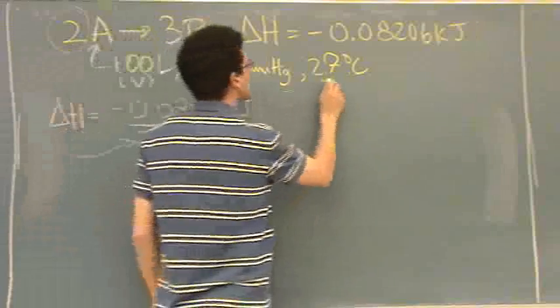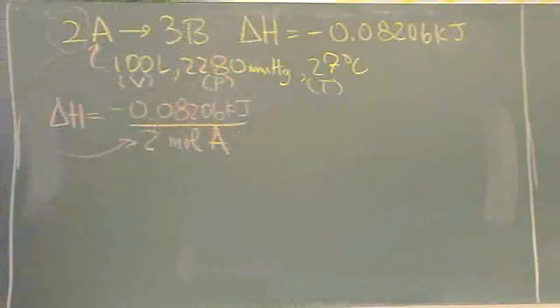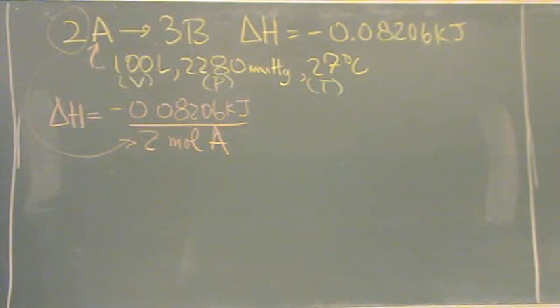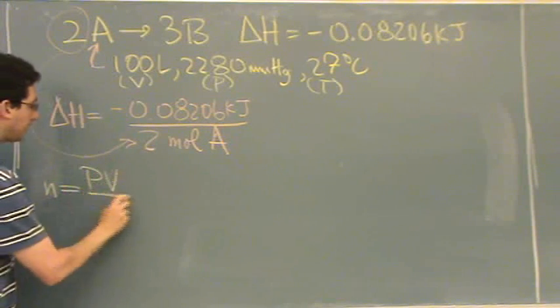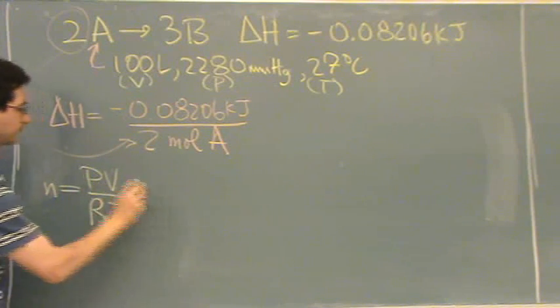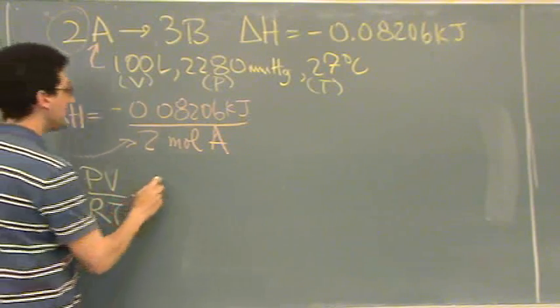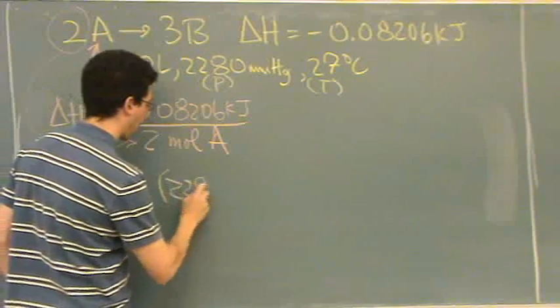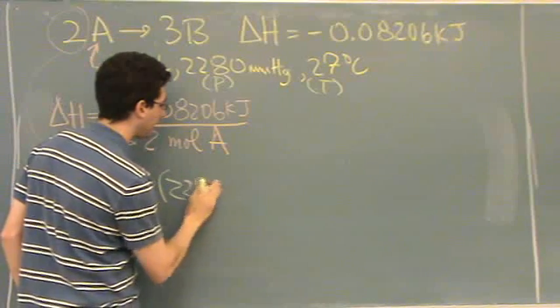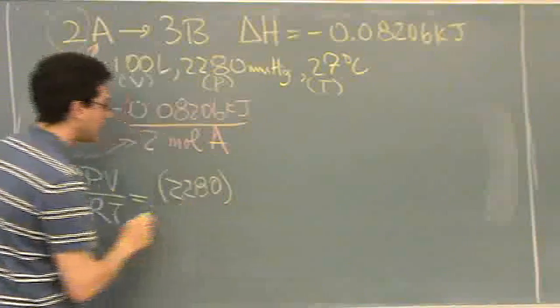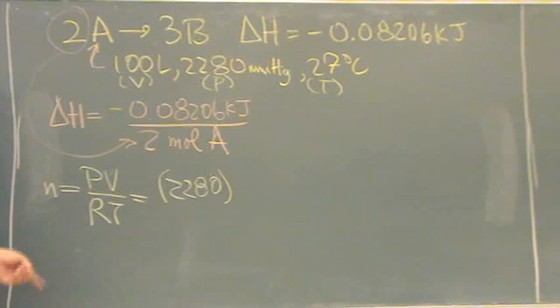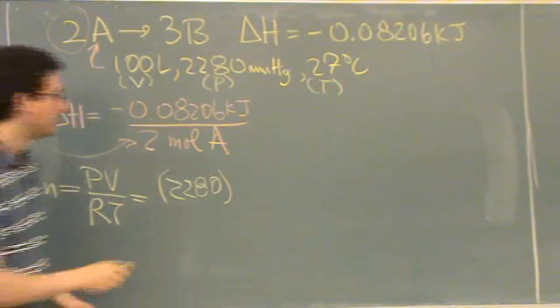So we'll take notice that this is a volume, this is a pressure, and this is a temperature. So this is ideal gas law. So n is PV over RT. P is 2280, that's millimeters of mercury.